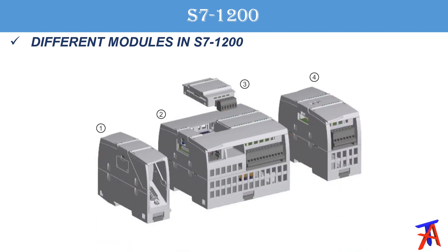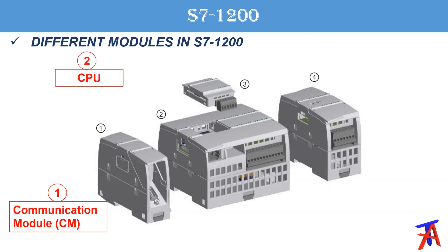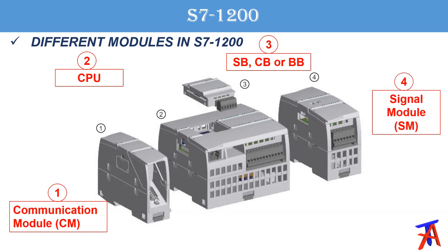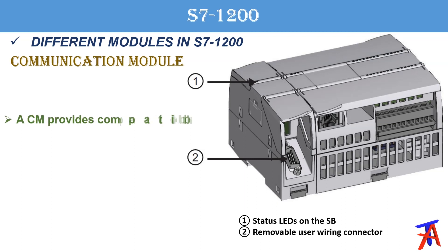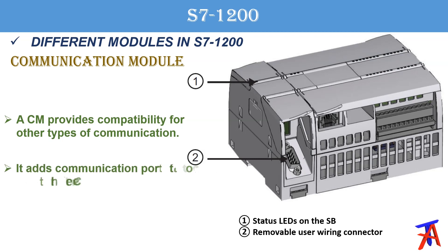There are different modules in the S7 1200 PLC. First is the communication module, second is the CPU, and third is the communication board, signal board, or battery board. The fourth type is signal modules. A communication module is added to the left side of the PLC — it provides compatibility for other types of communication and adds a communication port to the CPU.